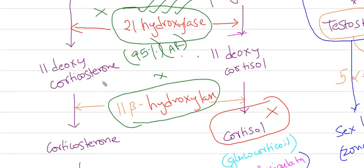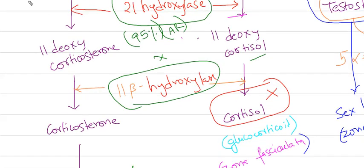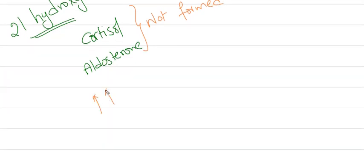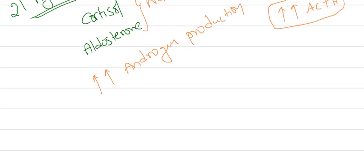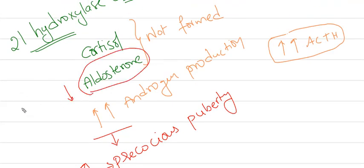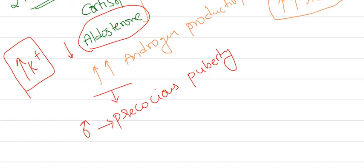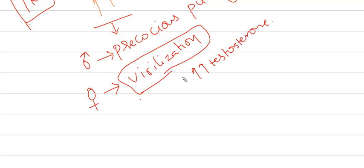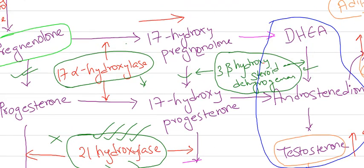In 21-hydroxylase deficiency, both cortisol and aldosterone are decreased, while androgen production is increased due to elevated ACTH. In males, this causes precocious puberty — the male child attains puberty before age 10. Due to decreased aldosterone, potassium levels increase, causing hyperkalemia. In females, virilization occurs — meaning excess hair growth and masculinization due to increased testosterone.